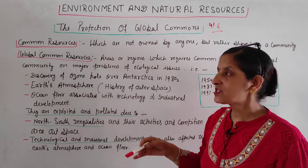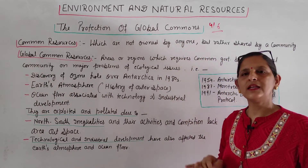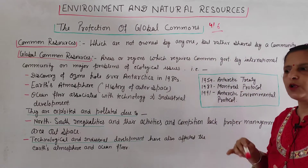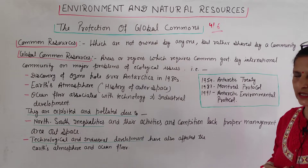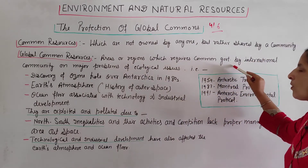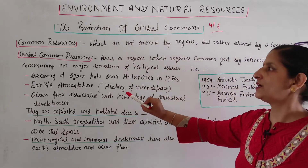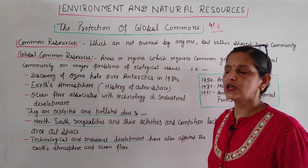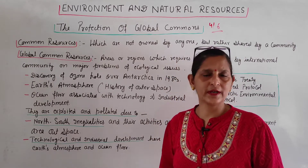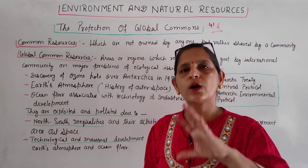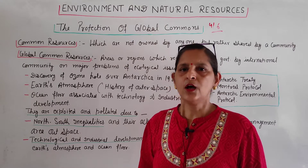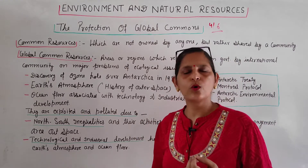Common resources kaunse honge — which are not owned by anyone, jiska koi ek malik nahi hai, but rather shared by a community, balki ek puri community ke dwara milkar unko share kiya jata hai. Whereas global commons are areas or regions which require common governance by the international community on major ecological issues. Global common resources woh hain jo kisi ek community, ek country, ek state ke nahi hain, balki woh pure globe ke hain — pure world ka unpar right hai.